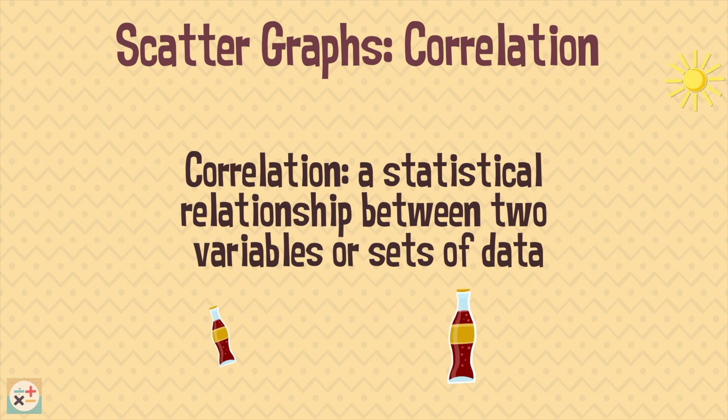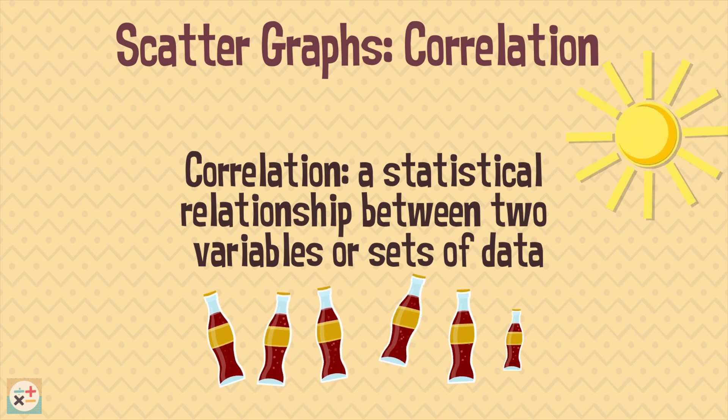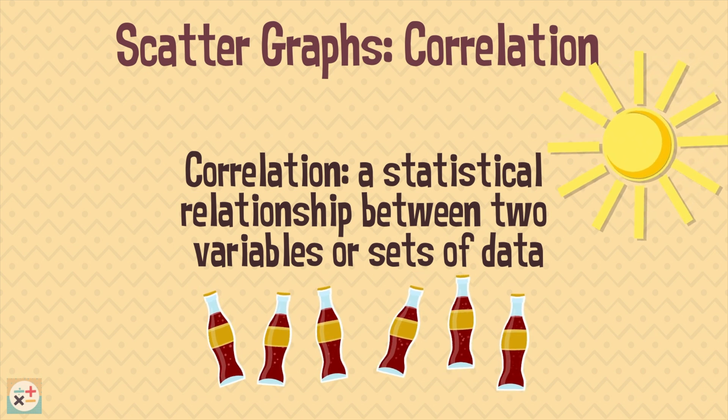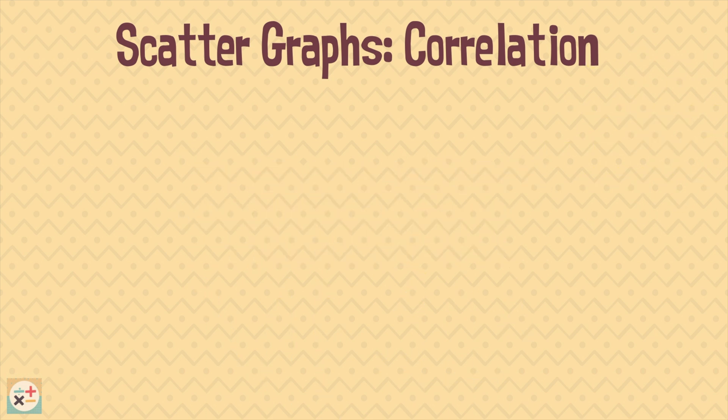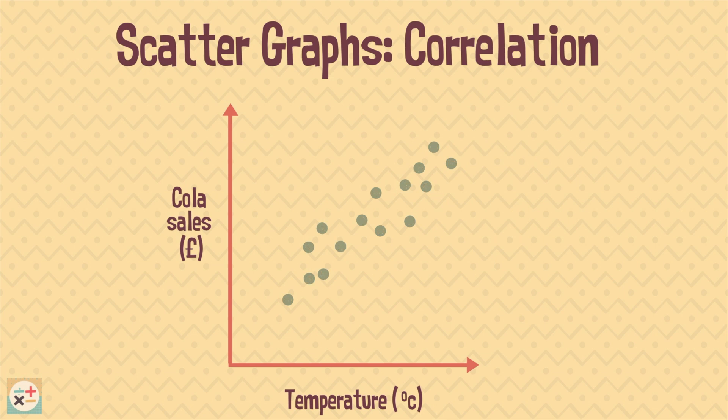For example, cola sales increasing as the temperature increases. This information can be visually represented on a scatter graph. If we can draw a line of best fit then we can say that cola sales and temperature are correlated.